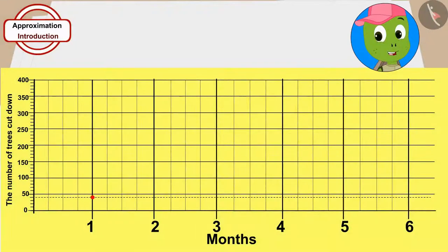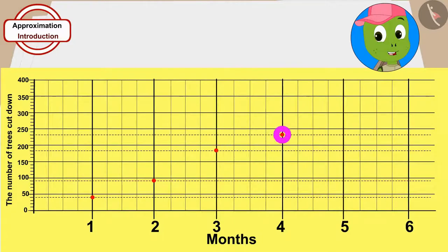At the end of each month, Tufan counted the number of trees cut and recorded this on the paper.